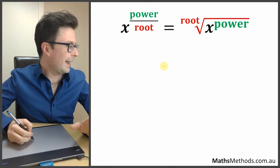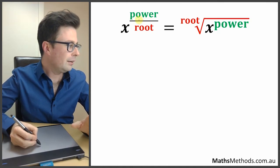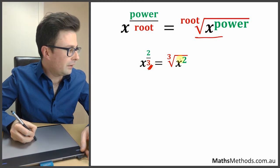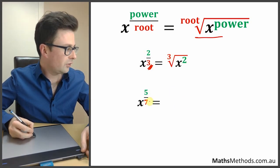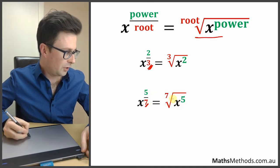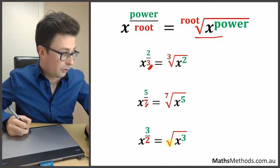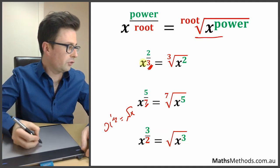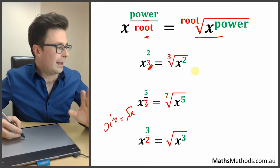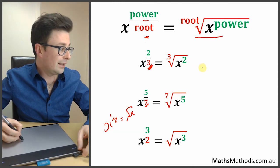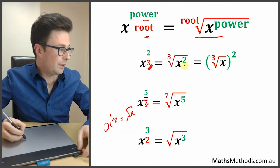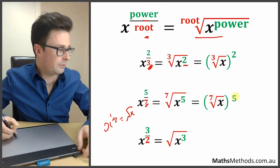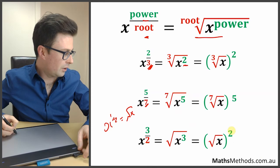Going further: if you've got a fraction as a power, like x to the power of 2 over 3, that's equivalent to the cube root of x squared. x to the power of 5 over 7 is the seventh root of x to the power of 5. And x to the power of 3 over 2 is the square root of x to the power of 3 — the top number gives the power and the bottom number gives the root. You can also apply the root first and the power second — both orders give the same result.